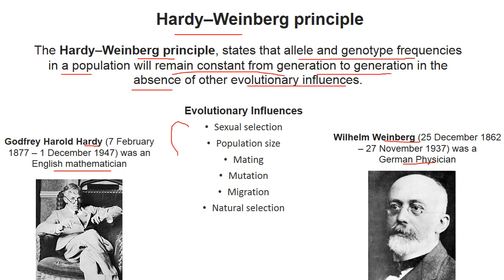What are the evolutionary influences? Absence of evolutionary influences means there will be no sexual selection, the population size must be large, no mutation, no migration, and no natural selection. If these conditions are fulfilled, then the allele frequency or genotype frequency in a population will remain constant from generation to generation. This is the Hardy-Weinberg principle.